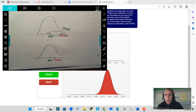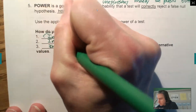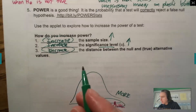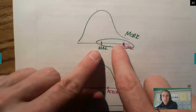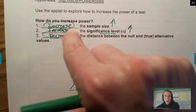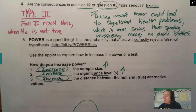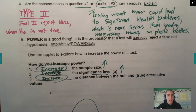So in all three scenarios: if I increase the sample size, if I increase the significance level, and if I increase the distance between the actual value and what our null hypothesis is — all three of those are going to result in a more powerful test. You don't need to know how to calculate power, but you should understand the idea of what power means. Go to the next page and we'll touch on those important ideas.